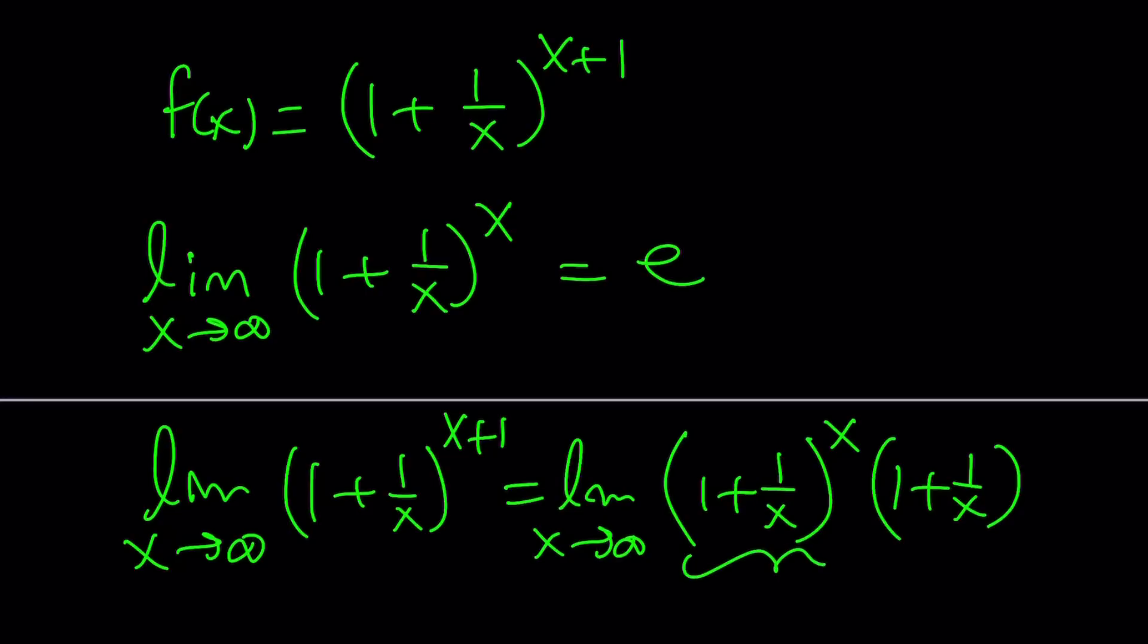Now, as x approaches infinity, we know that this approaches e. And what about this one? Well, as x approaches infinity, this is going to approach infinity. So 1 over x is going to approach 0. 1 plus 0 is going to approach 1. So you're going to multiply by 1. It doesn't matter.